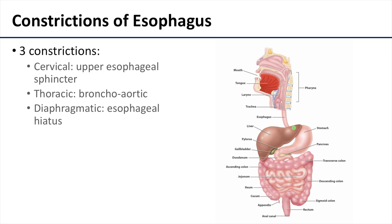Lastly, you're going to have a diaphragmatic constriction, where the esophagus is passing through the diaphragm through the esophageal hiatus. Awareness of these constrictions is important because when you're passing an instrument through the esophagus to the stomach, you really need to be aware of where these constrictions occur.